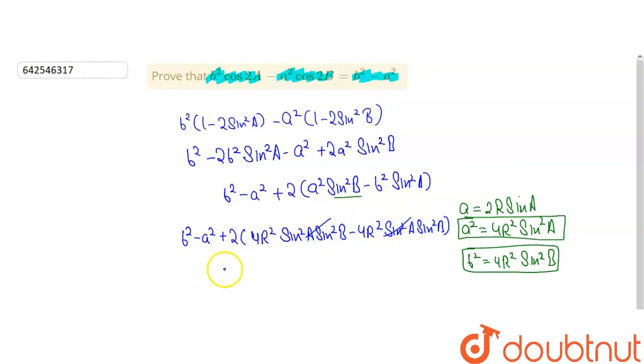Which will cancel out and we will get the answer b squared minus a squared. And we can say that hence proved.